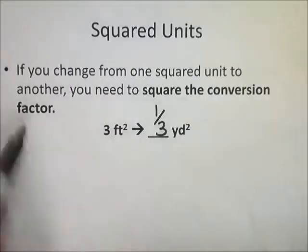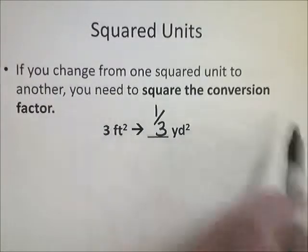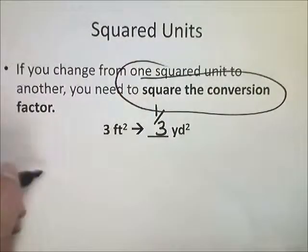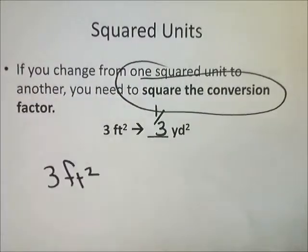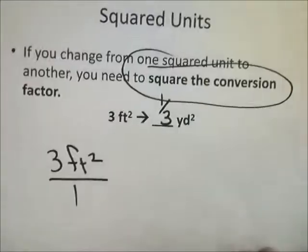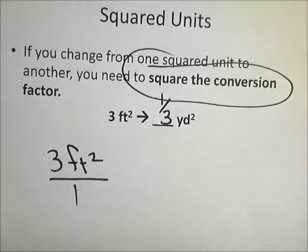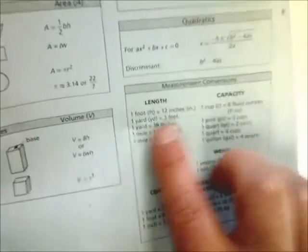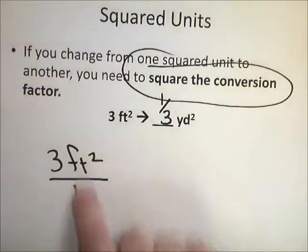The big difference between this and anything else is that I just need to square the conversion factor. So I have 3 feet squared over 1. You can't see squared units on this, but you can see that for 3 feet you get 1 yard. So I'm going to still use that.